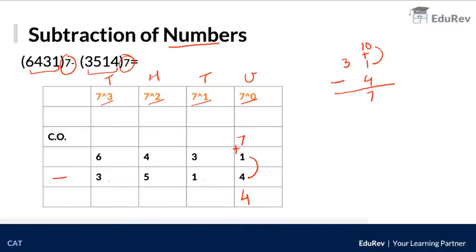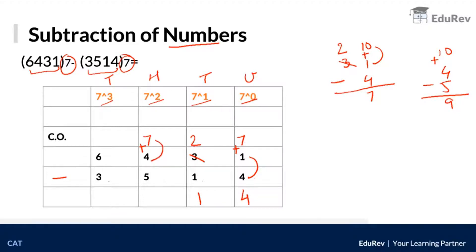Since we borrowed, the next digit 3 becomes 2. Then 2 minus 1 is 1. Next, 4 cannot be subtracted from 5, so we add 7 to 4, giving 11. Eleven minus 5 equals 6. That digit then reduces by one carry, so 6 becomes 5, and 5 minus 3 is 2. The final subtracted value is 2614.